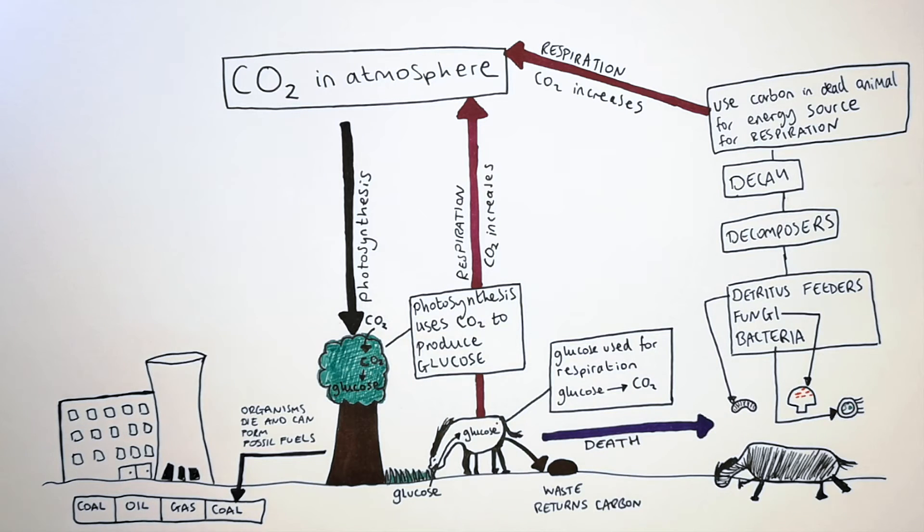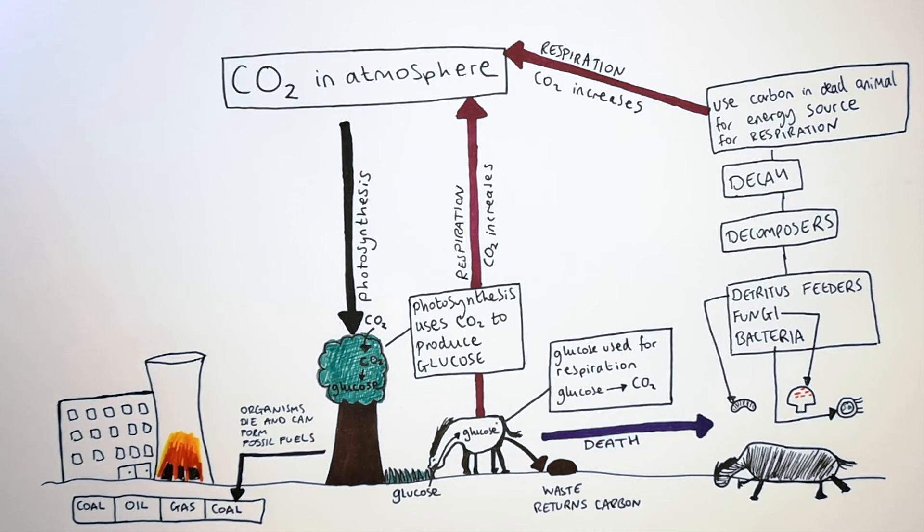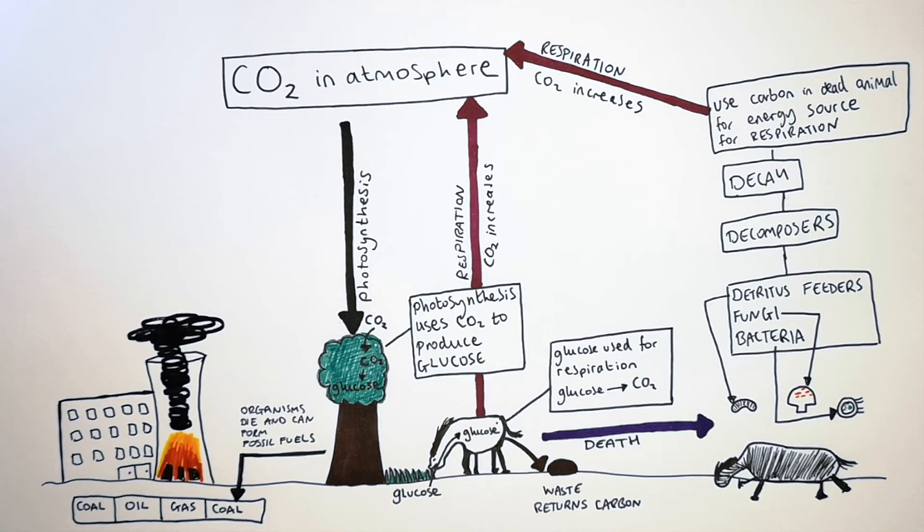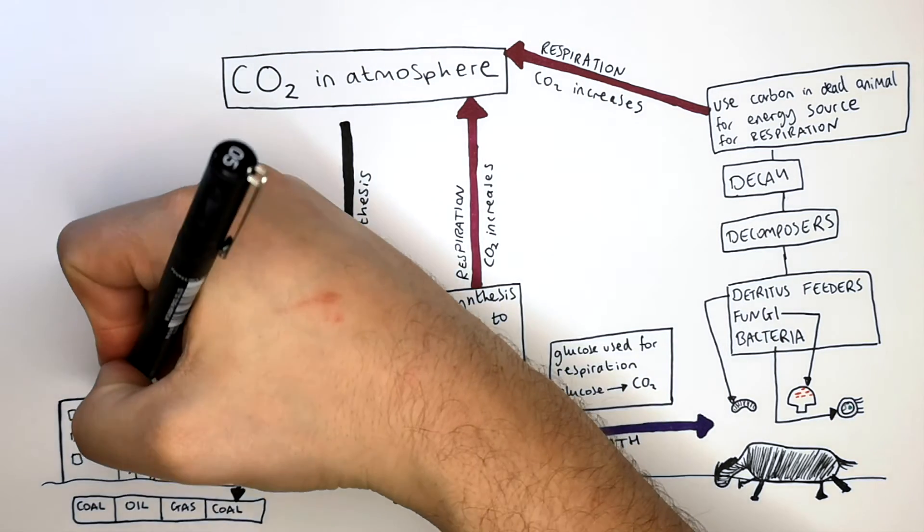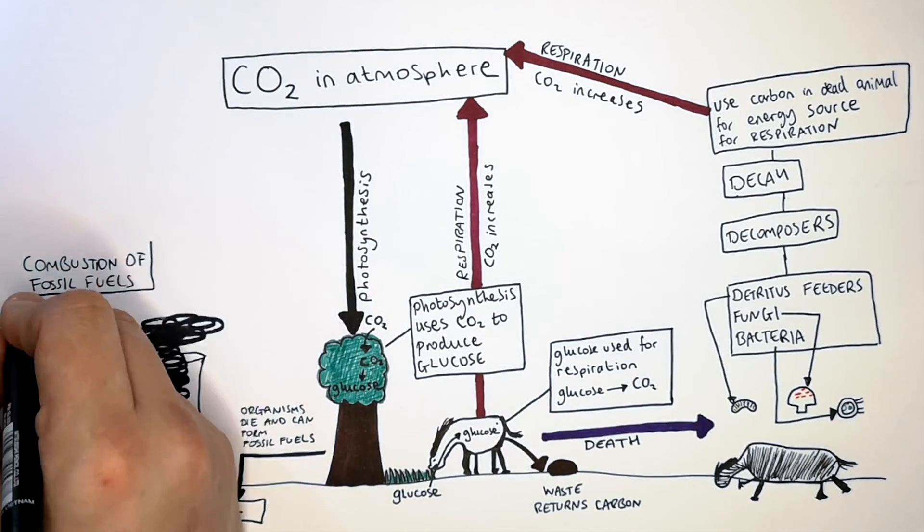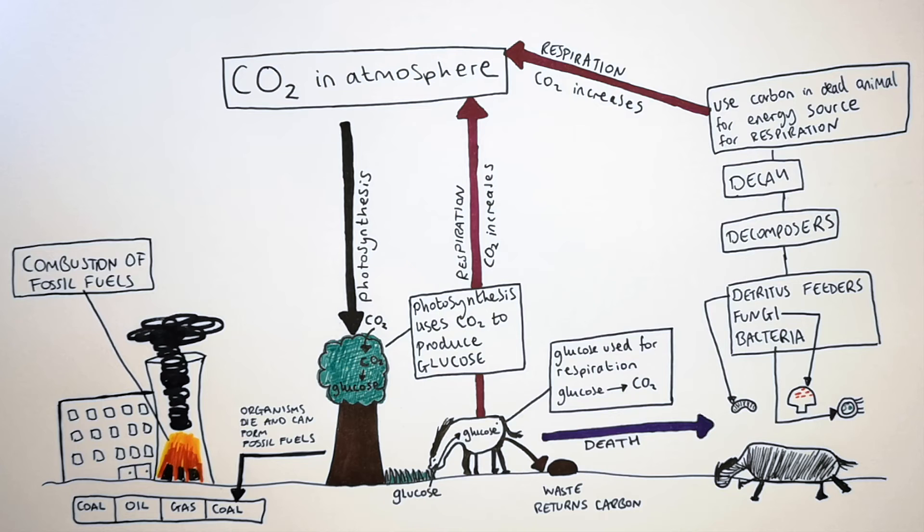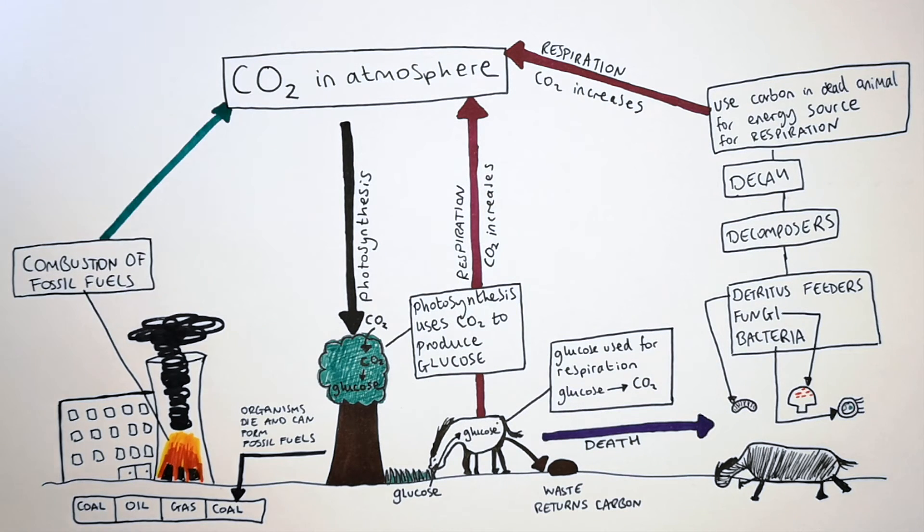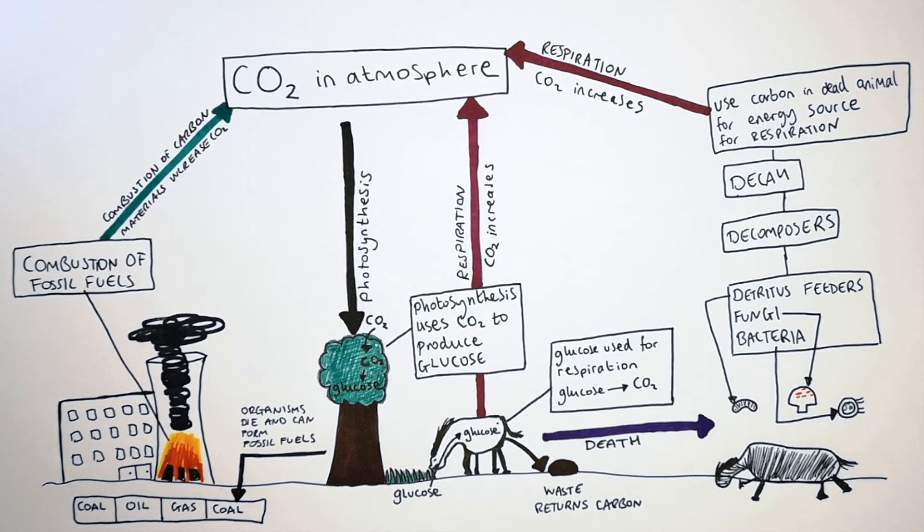Humans can then combust fossil fuels, releasing carbon back into the atmosphere as CO2. Carbon dioxide is released back into the atmosphere from combusting carbon-based materials, including wood and plastics too. Remember, the combustion of carbon increases CO2 in the atmosphere.